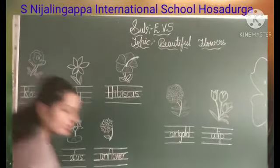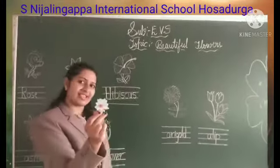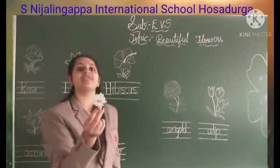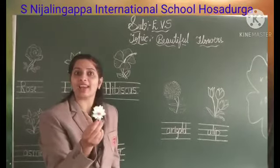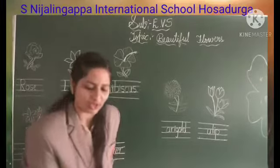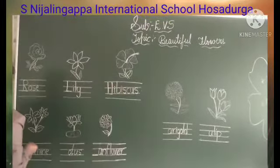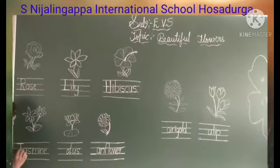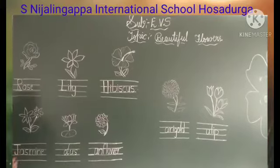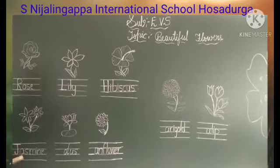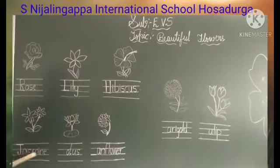Next one — which flower is this? Yes, jasmine. Which flower? Jasmine. So you write J here, okay? Write the first letter, J. J-A-S-M-I-N-E, jasmine.